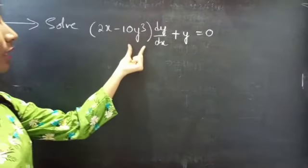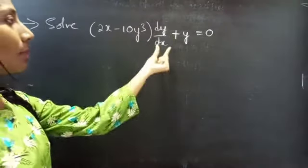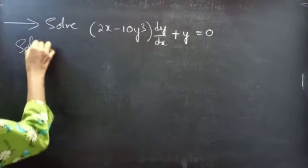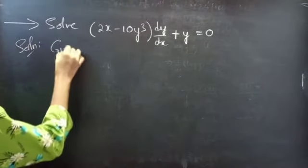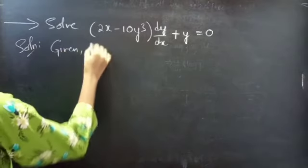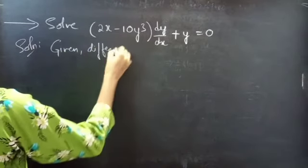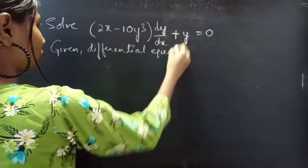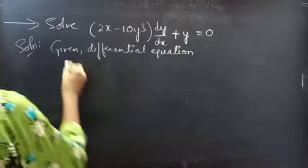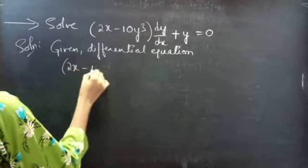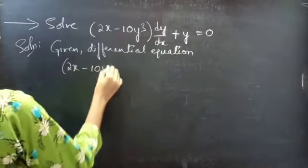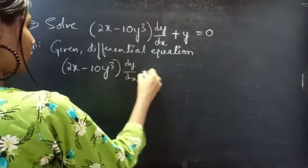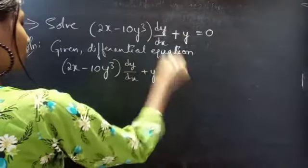Solve: (2x minus 10y³) times dy/dx plus y equals 0. Solution. Given differential equation: (2x minus 10y³) times dy/dx plus y equals 0.